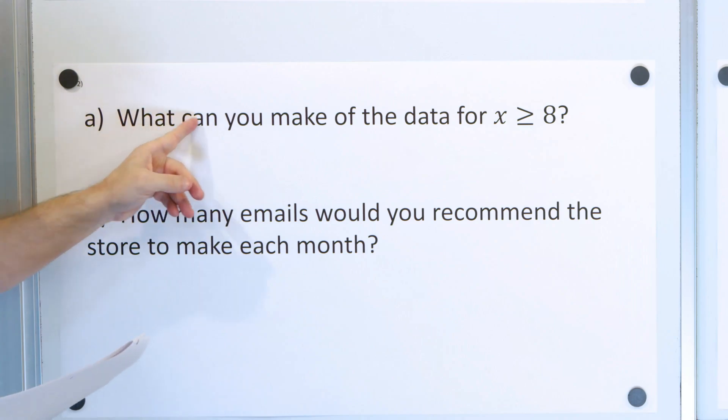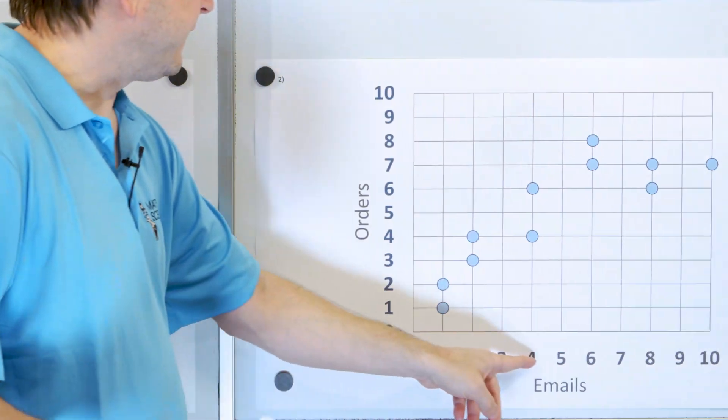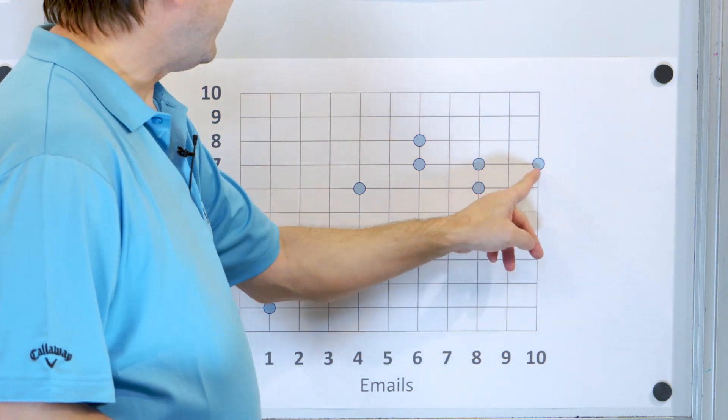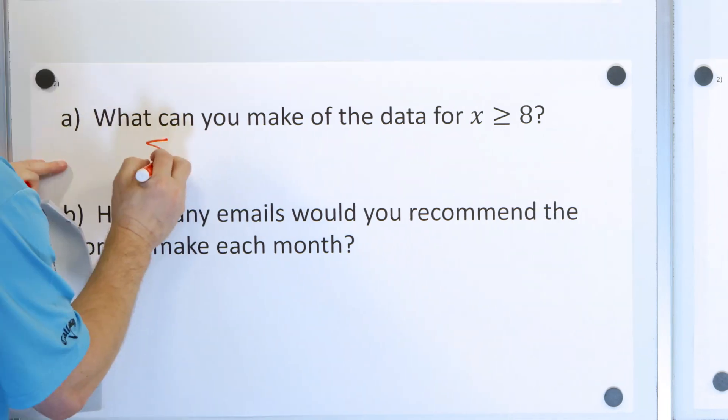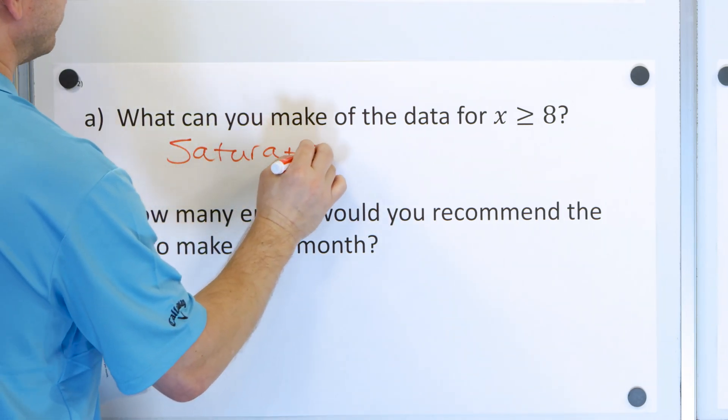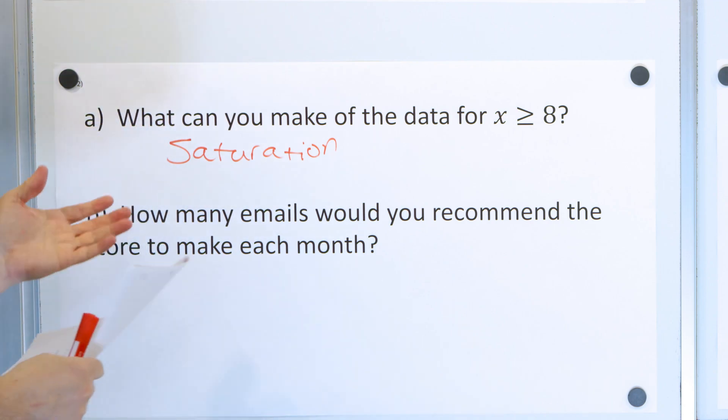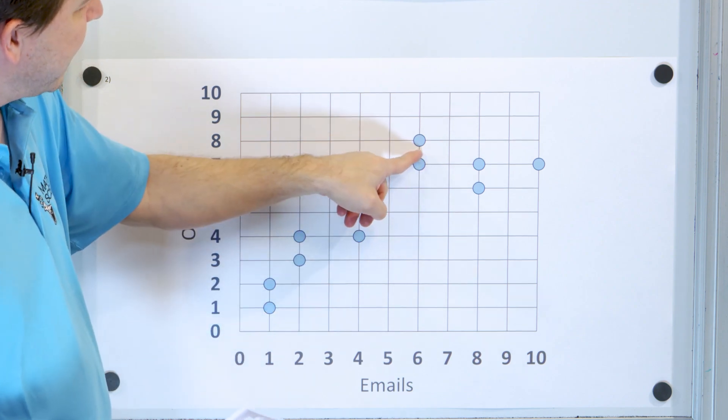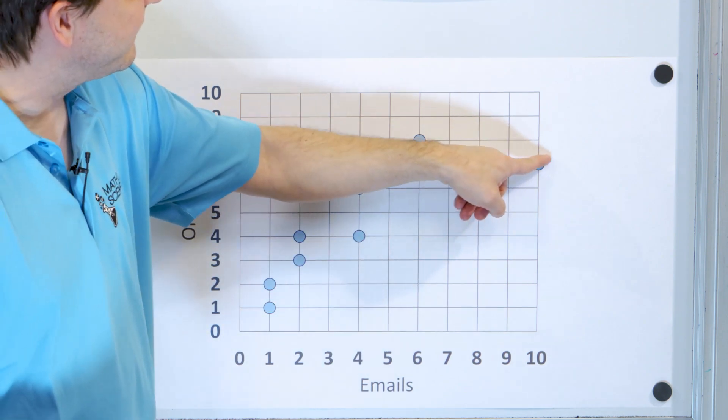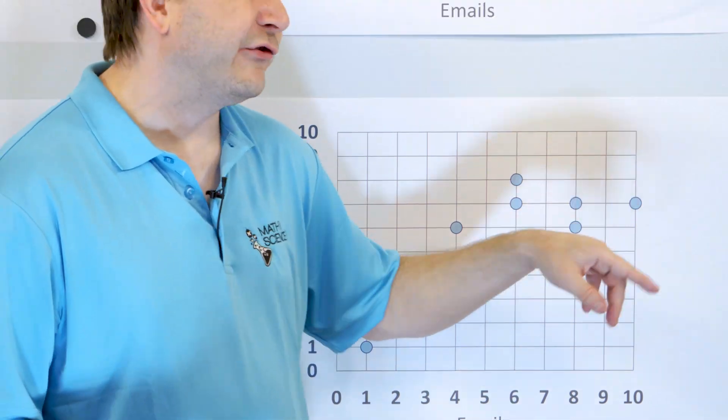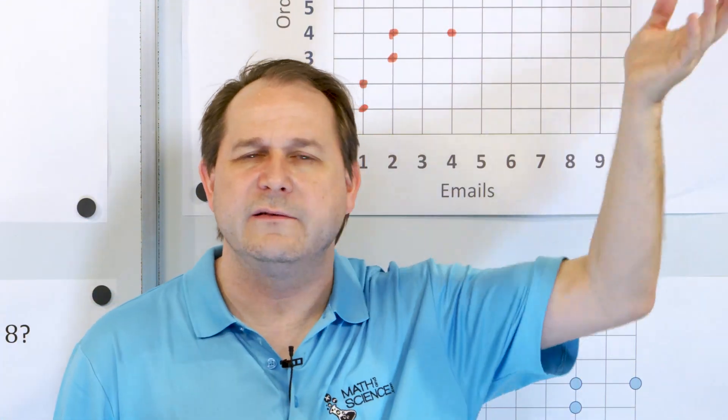So what can you make of the data for X greater than or equal to eight, where X is the number of emails? It's the saturation that we talked about here. In other words, there's a very positive correlation here all the way up to this point, up to six emails. But then after that, it stays constant. There's really no correlation of the data beyond that point. Beyond X is greater than six, there's no correlation because the orders stop going up.